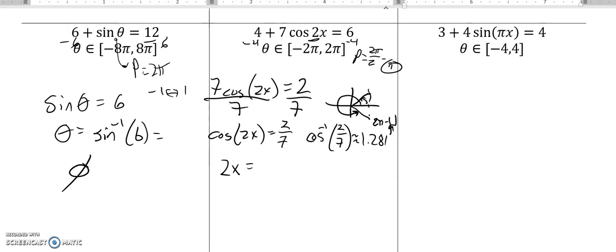Notice those aren't my answers. That's what 2x equals, so 2x equals 1.281. And if I go 2π minus that, I get about 5.002. And so now if I want to know what x is, I divide everything by 2.